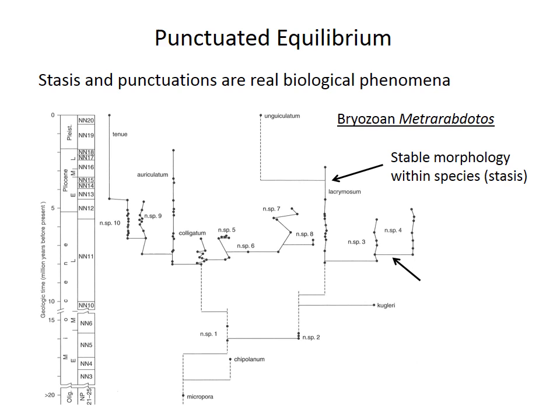Morphology within a species exhibits stasis — in the case of the species with the arrow, it's pretty constant. Some other species have small random fluctuations but no clear trend. The speciation events are geologically rapid. This is a great example of punctuated equilibrium; there's no evidence of gradual directional shifts in the morphology of any of these species.